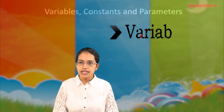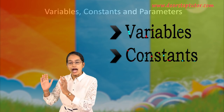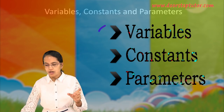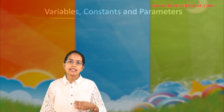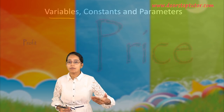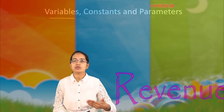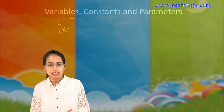When we proceed with mathematical aspects, we have three things to understand: the variable, the constants, and the parameters. Let's talk about the variable first. A variable is simply anything that varies — the price, the profit, the revenue, the cost. All of these vary, and when they vary we call them variables.